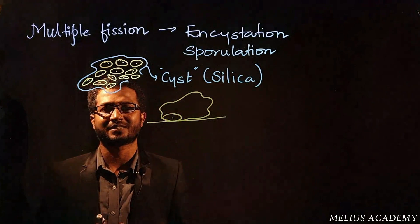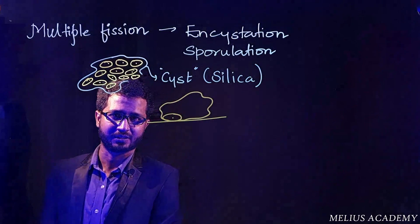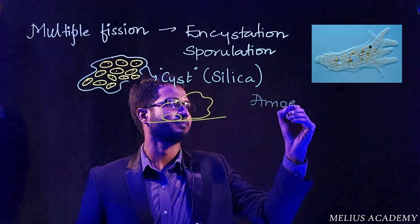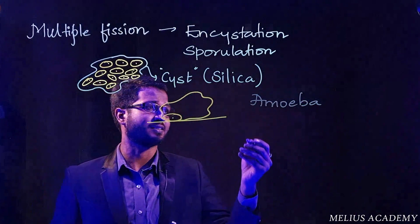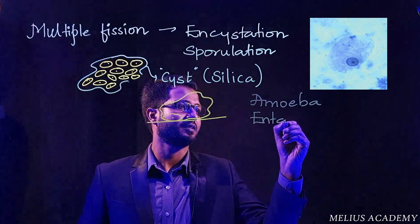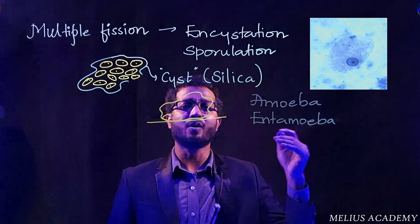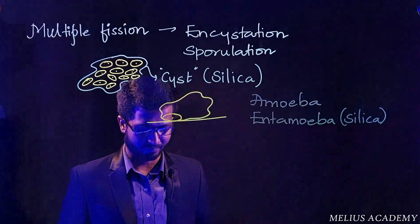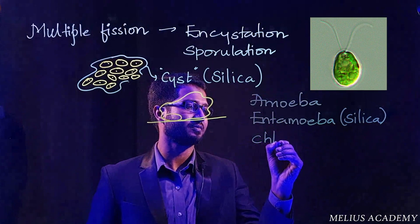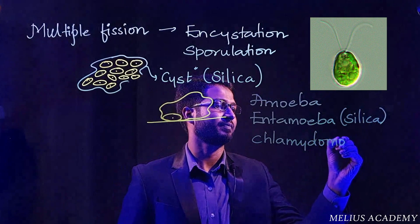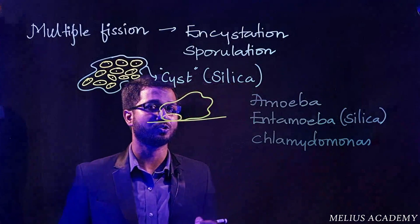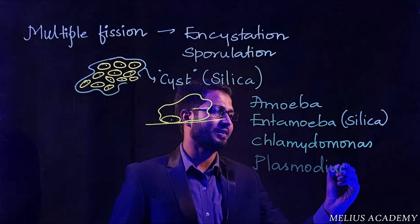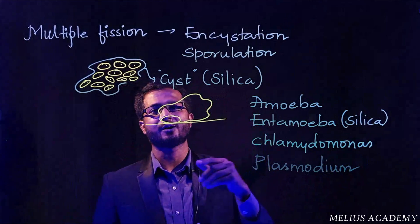We need to explore more examples. One example given in the textbook is amoeba. Amoeba has different varieties, such as ant amoeba, whose wall layer always has silica in its structure — that is why it is also available in marine form. Followed by this, we have chlamydomonas, which also divides by multiple fission. So all these are examples of organisms that divide by multiple fission.